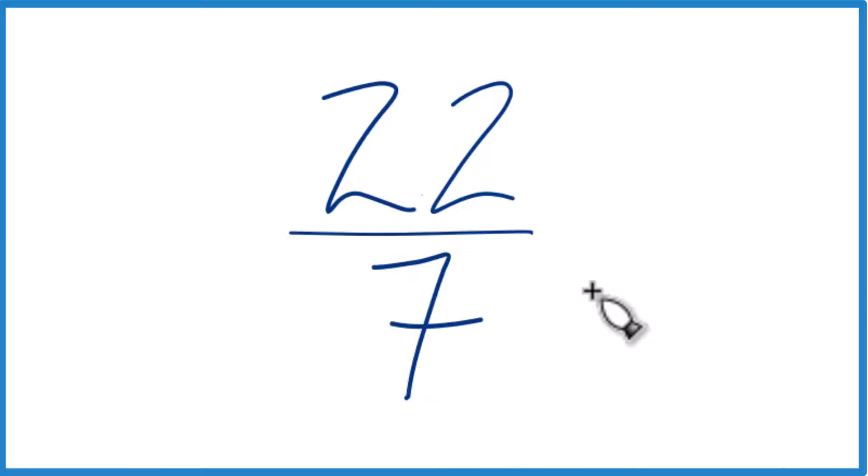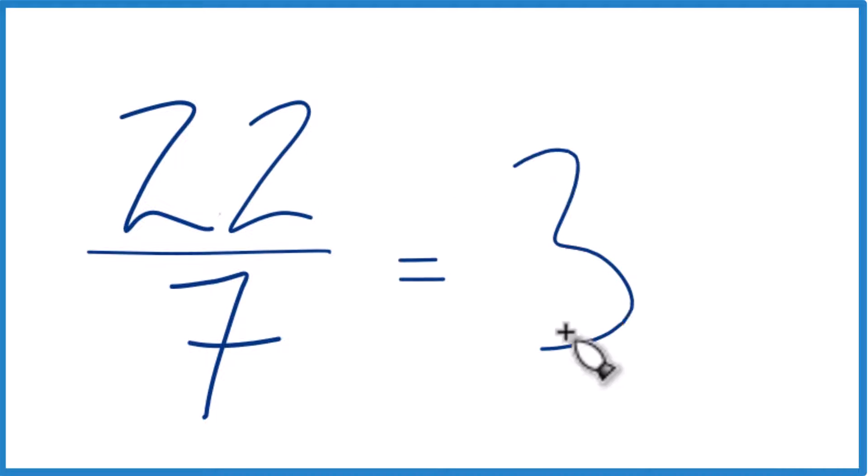Let's get it to a mixed number, though. So 7 goes into 22. Well, 7 times 3 is 21. That's pretty close, and it doesn't go over. So 3, that's our whole number. 3 times 7 is 21. We have a remainder of 1.